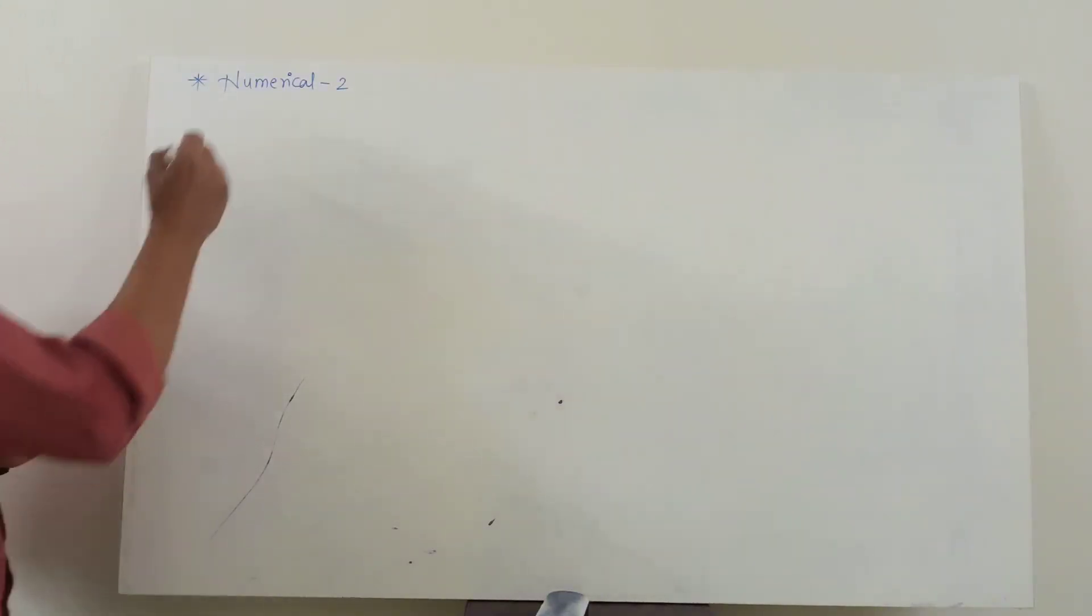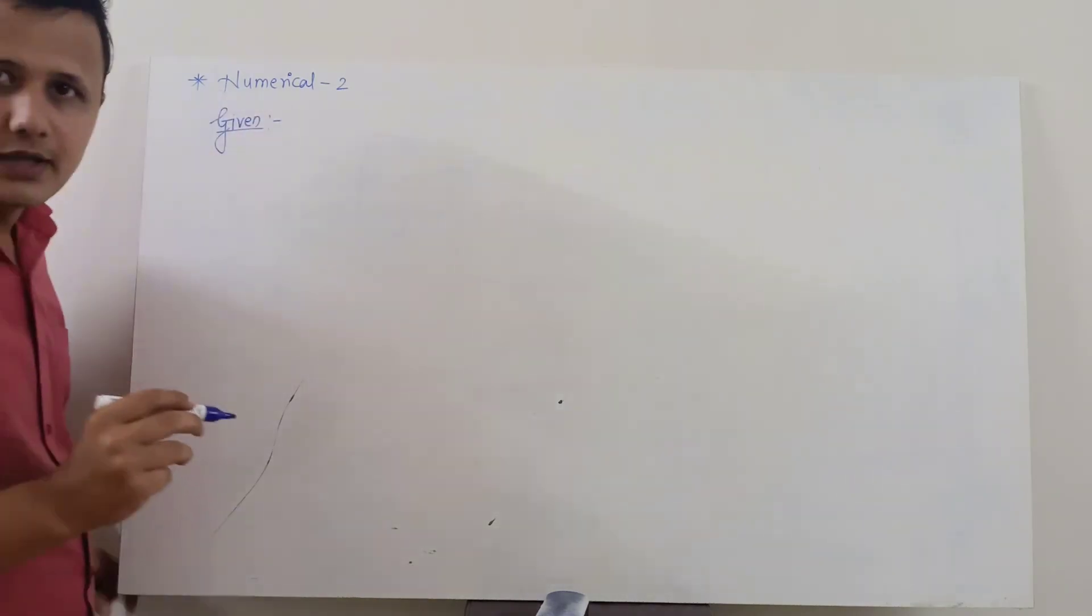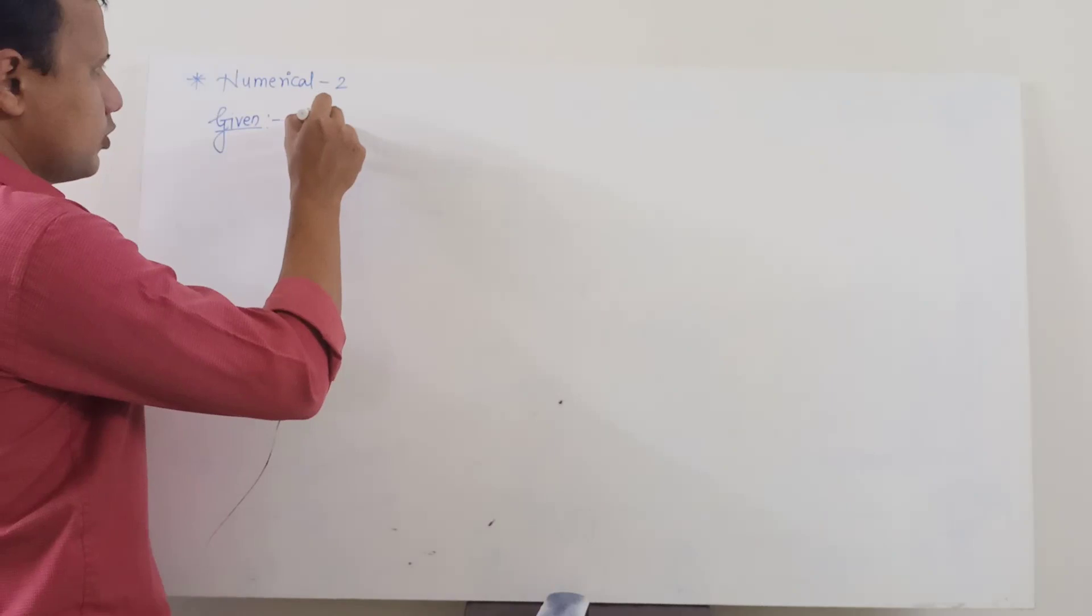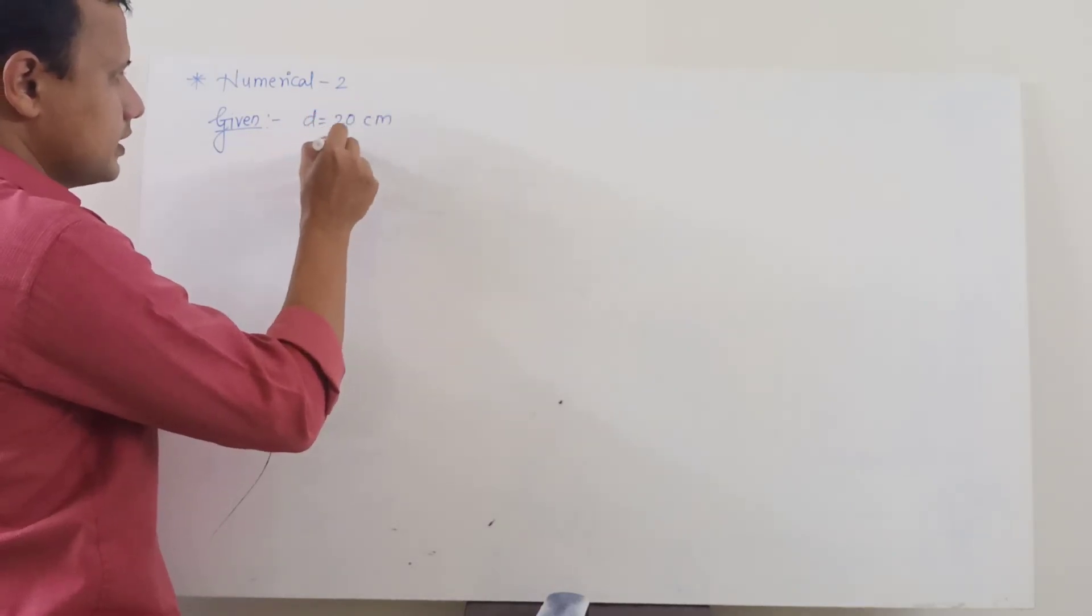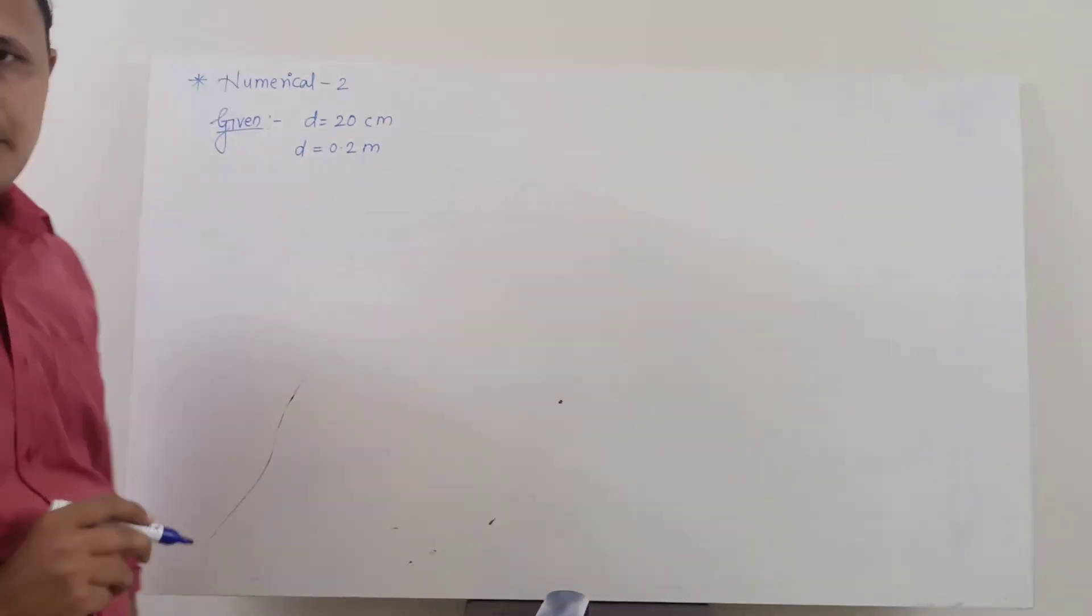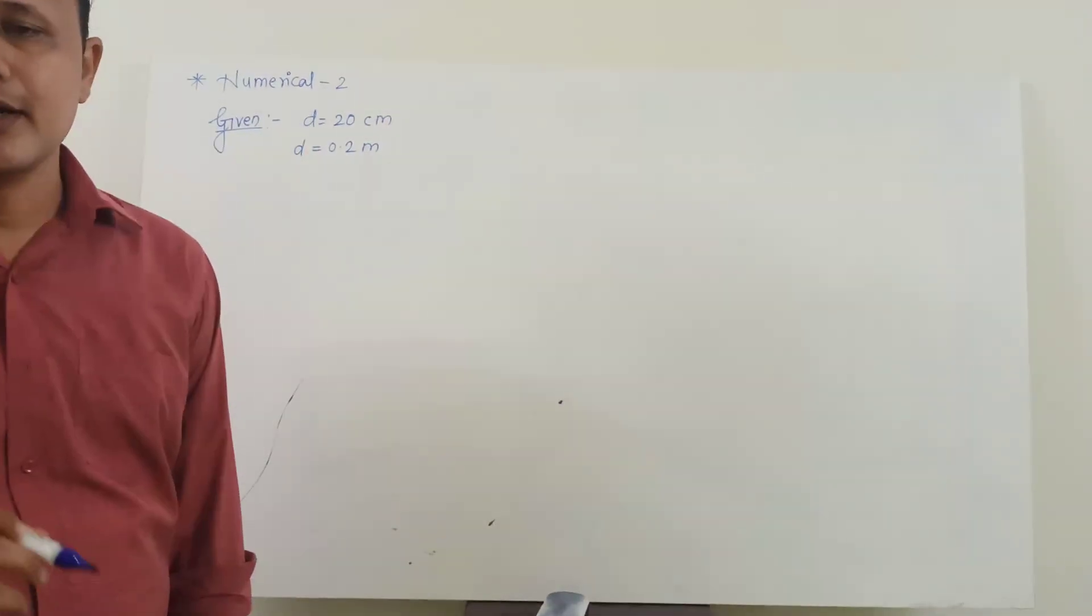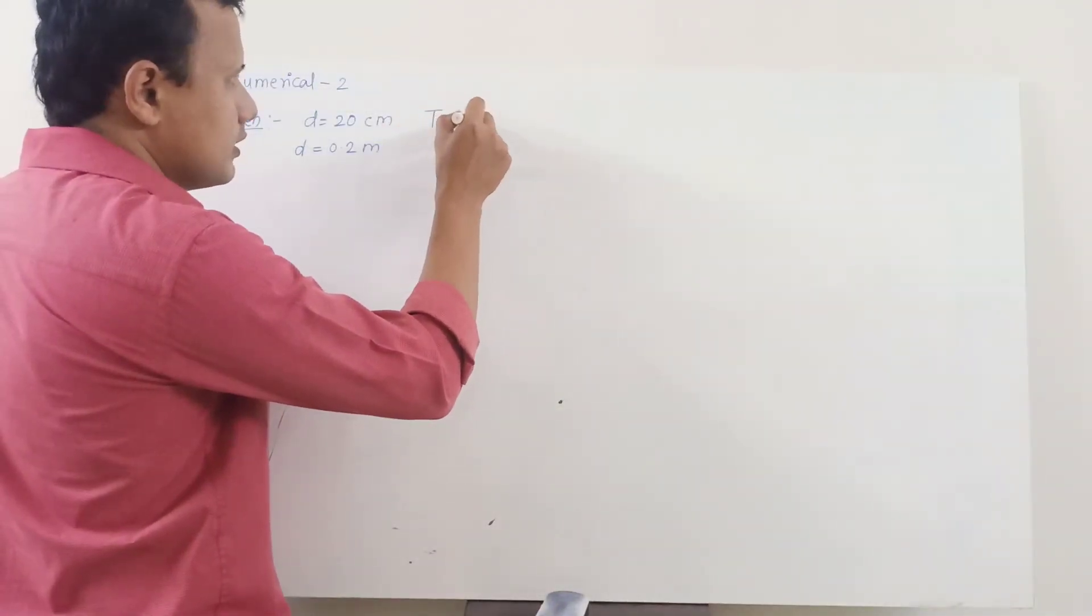So let us see, firstly we will shortlist the given quantities. The first thing which has been given is the diameter of this ball which is 20 centimeter or we will simply convert it into meter so it will be 0.2 meter.